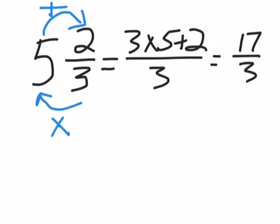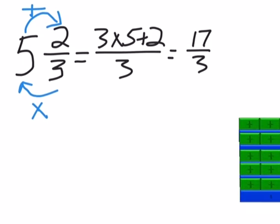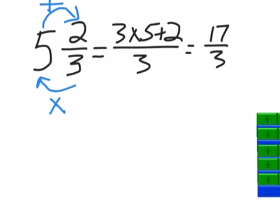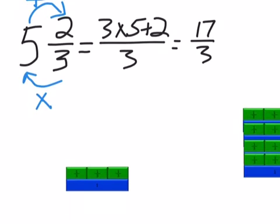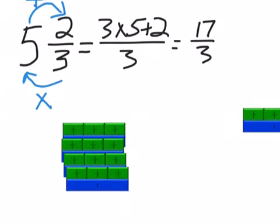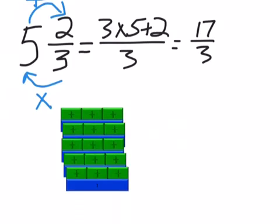And sometimes people get a little bit confused about multiplying first and then adding. So just as a visual, just see that the three times five is simply telling you that we've got five wholes. And each one of those five wholes is made up of three thirds. So there's your five times three. That gets you your fifteen.